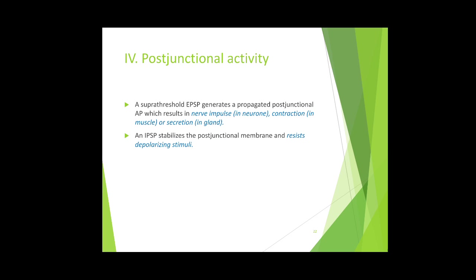The fourth process is post-junctional activity. A suprathreshold EPSP generates a propagated post-junctional action potential resulting in nerve impulse, contraction, or secretion — in neurons, muscles, and glands respectively. An IPSP stabilizes the post-junctional membrane and resists the depolarizing stimulus, so there is no secretion, no contraction, and no impulse generation or conduction in the neuron.